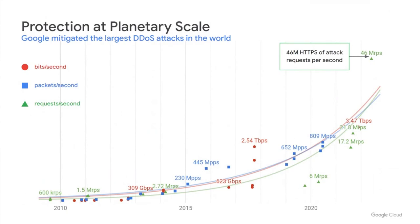We recently announced that we protected a GCP customer from the largest DDoS attack reported to date at 46 million requests per second. A few years ago, we also protected against a 2.54 terabit volumetric attack, also holding the record for that attack type until earlier this year. This is made possible because we provision enough capacity at the edge of our network to absorb high volume attacks. We continue to see exponential growth in attack sizes and are continuing to invest in our network scale and capacity to ensure customer services remain available and reliable.